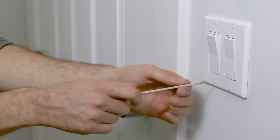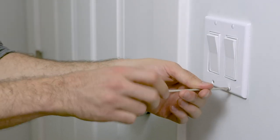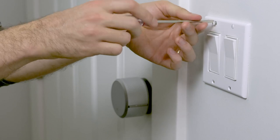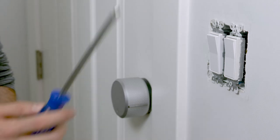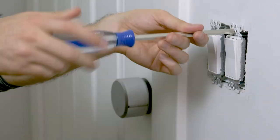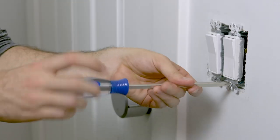Now I will use the flathead screwdriver to remove the old switch cover. With the faceplate removed I will now use the Phillips screwdriver to remove the screws and pull out the switches from the gang box.